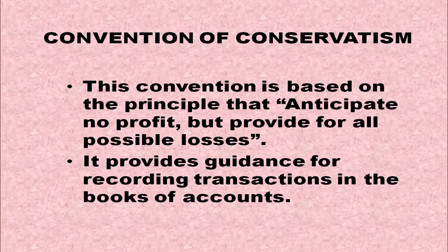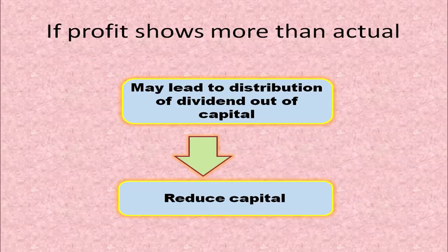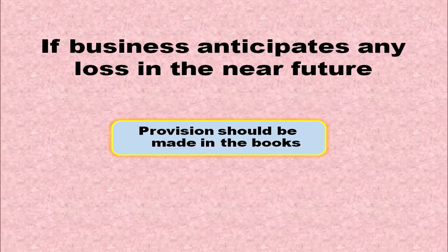Next is the Convention of Conservatism. This convention is based on the principle: anticipate no profit, but provide for all possible losses. It provides guidance for recording transactions in the books of accounts. The main objective is to show minimum profit — that is, profit should not be overstated. If profit is shown more than actual, it may lead to distribution of dividend out of capital, reducing the capital. If the business anticipates any loss in the near future, provision should be made in the books of accounts.